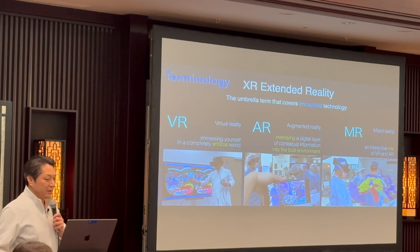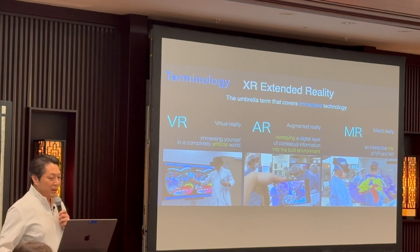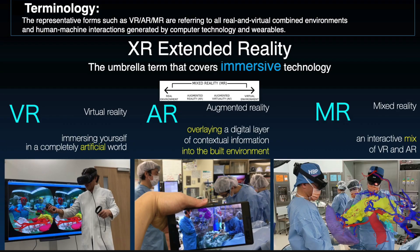Augmented reality overlays a digital layer of contextual information onto a built environment — you can see the actual location and position on digital monitors. Mixed reality is an immersive mix of VR and AR, combining both the real world and digital data.